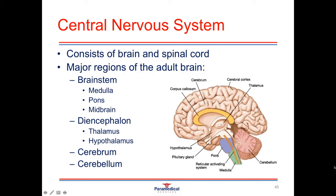The cerebellum is the structure sitting behind and below the cerebrum, at the base and the back of the brain. This is called the arbor vitae, or the tree of life. The cerebellum is responsible for a lot of motor function in the body, and lots of our coordination and balance all originate from this area.